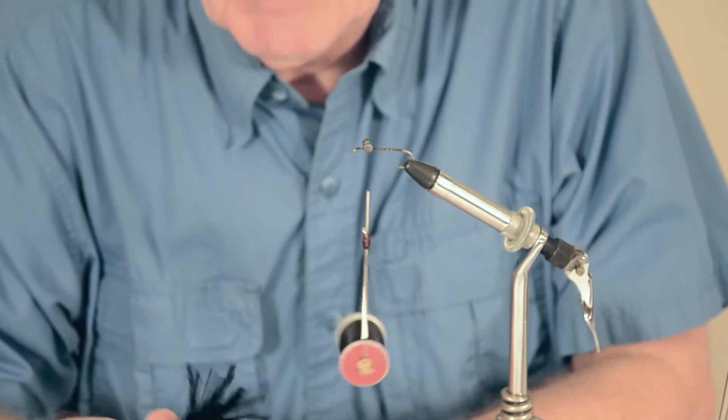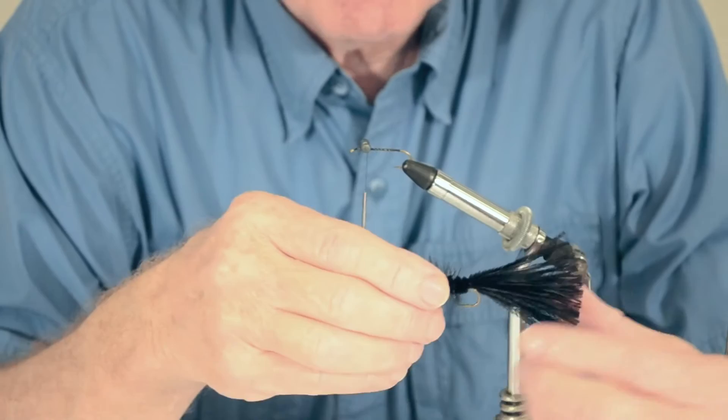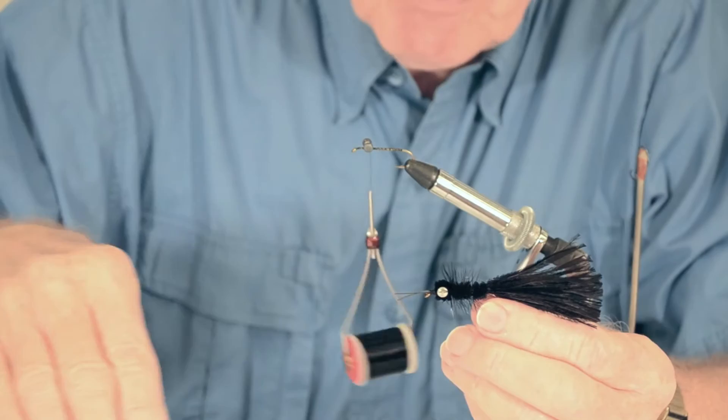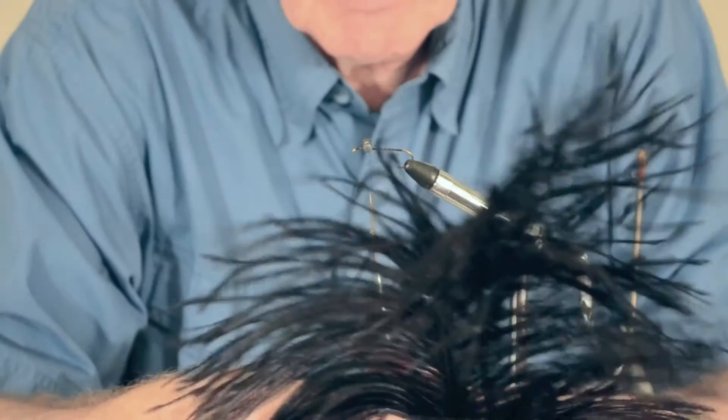The tail on this, if you want to call it that, is the ostrich herald. Actually, it's an extension of the body. It gives you that underwater wiggle back and forth. The natural helgrammite, when you get one out from under a rock and drop him in the stream, he swims downstream with a very pronounced undulating motion. The ostrich herald sticks together and gives you that motion. That's why we're using ostrich herald.